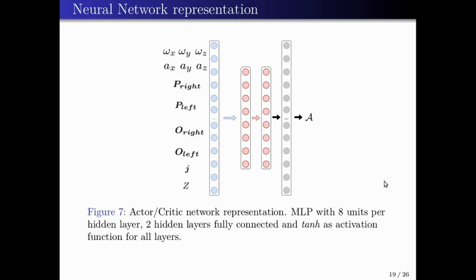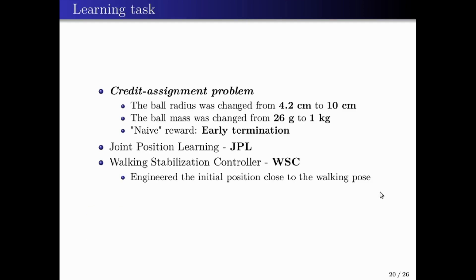We are using an actor-critic version of the PPO algorithm. For the actor and critic roles, we use the neural network architecture represented in figure number seven. The design of the experiments deals with the credit assignment problem — how to distribute reward among many actions. We added an external perturbation to the agent; specifically, we periodically push the agent. As RoboCup 3D Soccer Simulation League has no support to directly add external forces, we used the ball to push the agent.